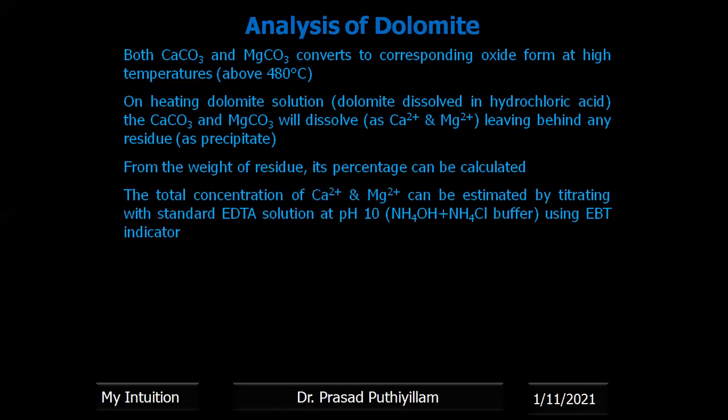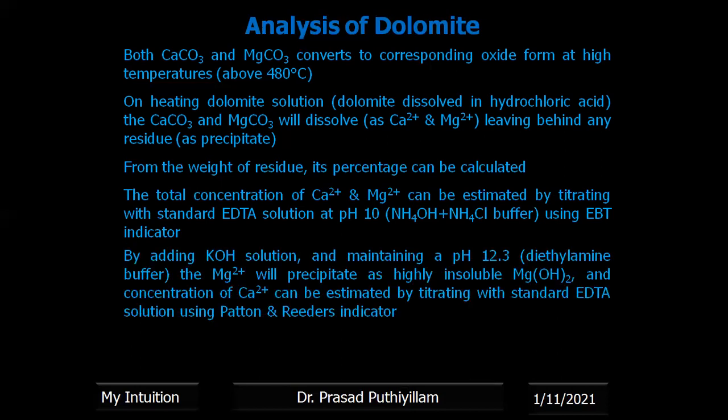The total concentration of calcium ions and magnesium ions can be estimated by titrating with standard EDTA solution — complexometric titration — because calcium and magnesium can form complexes with EDTA. At pH 10, maintained by ammoniacal buffer (ammonium hydroxide–ammonium chloride buffer), you can use Eriochrome Black T (EBT) as indicator.